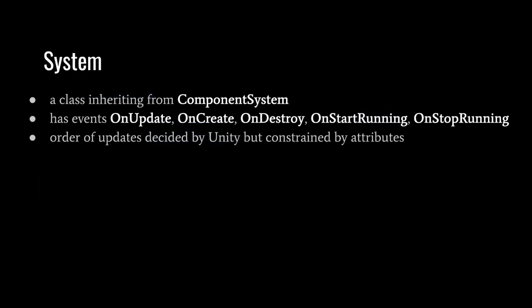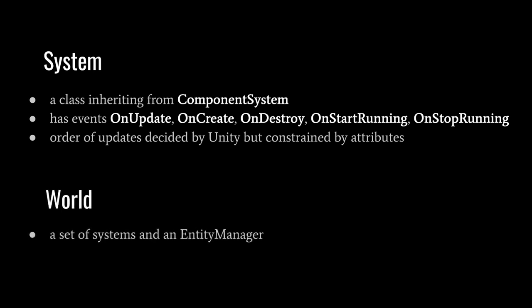A system is concretely a class inheriting from ComponentSystem. Like MonoBehaviours, systems have event methods called in the game loop — OnUpdate is called once per frame. Unlike MonoBehaviours, we don't attach systems to any game objects. We can group systems and use attributes to determine their order of updates, but where unspecified, the order is left up to Unity. A world is comprised of a set of systems and an entity manager, which keeps track of the world's entities. The systems of a world normally only access entities of their own world.